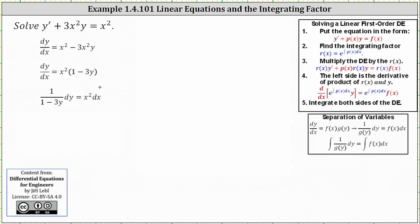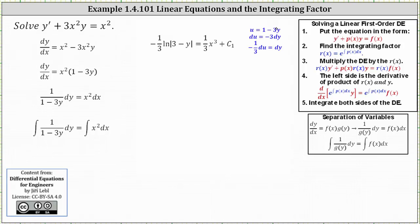We multiply both sides by 1 over the quantity 1 minus 3y and write the differential equation in differential form. Now we integrate both sides. On the left, u substitution gives u equals 1 minus 3y, du equals negative 3 dy, so negative one third du equals dy. Integrating on the left gives negative one third times the natural log of the absolute value of 1 minus 3y. On the right we get one third x cubed plus c sub 1.